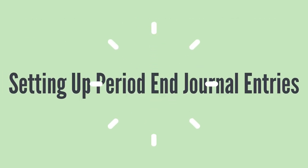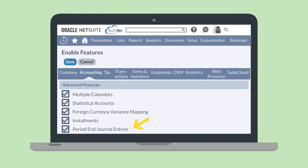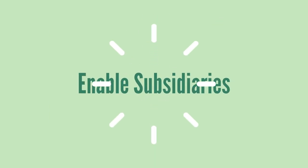To use period end journal entries in NetSuite, you need to have NetSuite OneWorld and to be using the accounting periods feature. You will also need to enable the period end journal entries feature, which you can do under the advanced features section of the accounting tab in Enable Features.